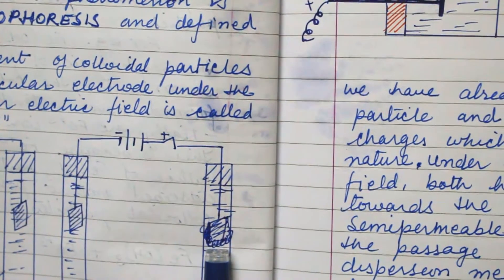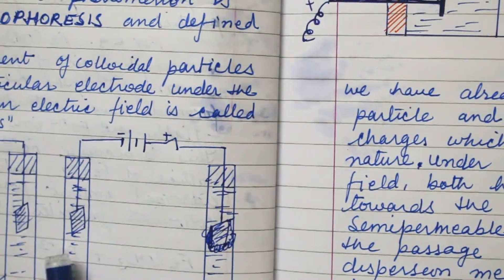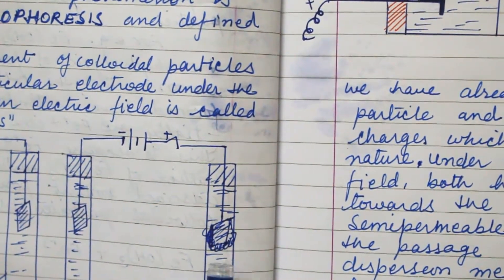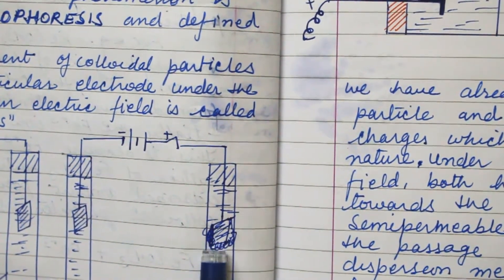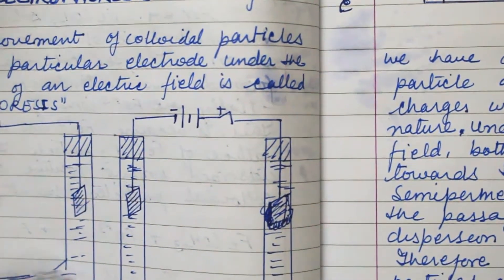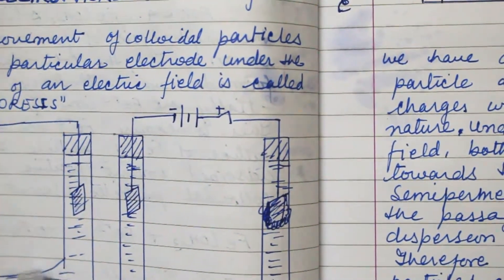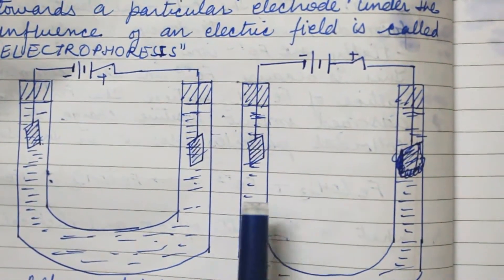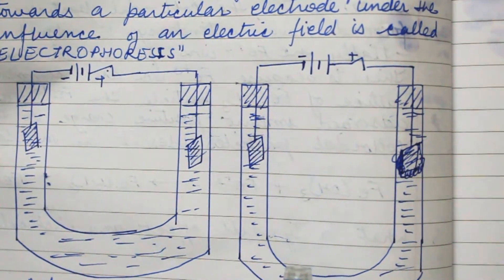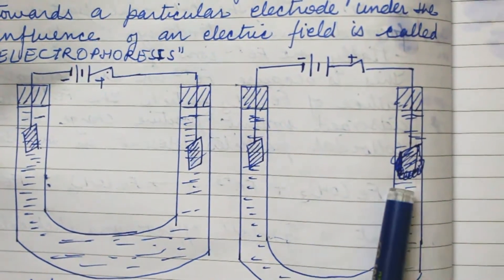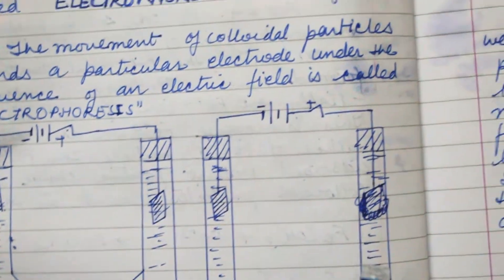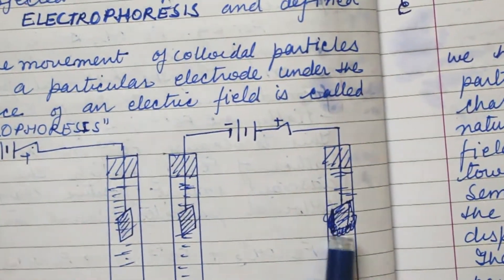After electrophoresis, all the negative charge accumulates on the positive electrode. Before electrophoresis, no charge is present there, but after applying the electric field, we have negative charge accumulated on the positive electrode.